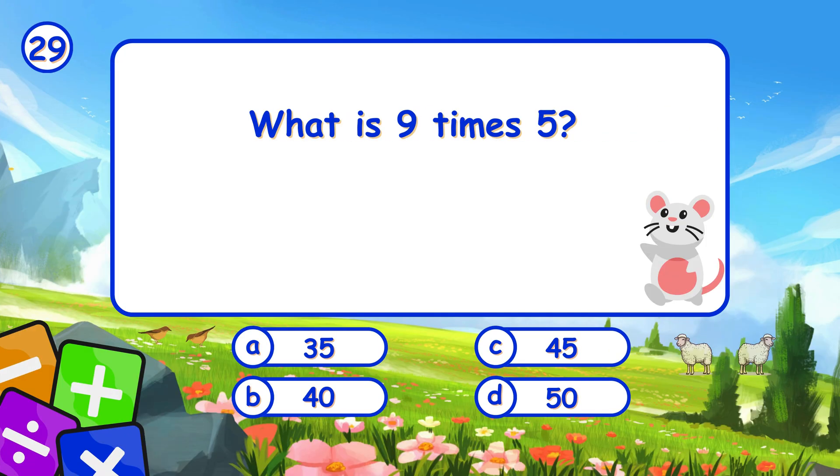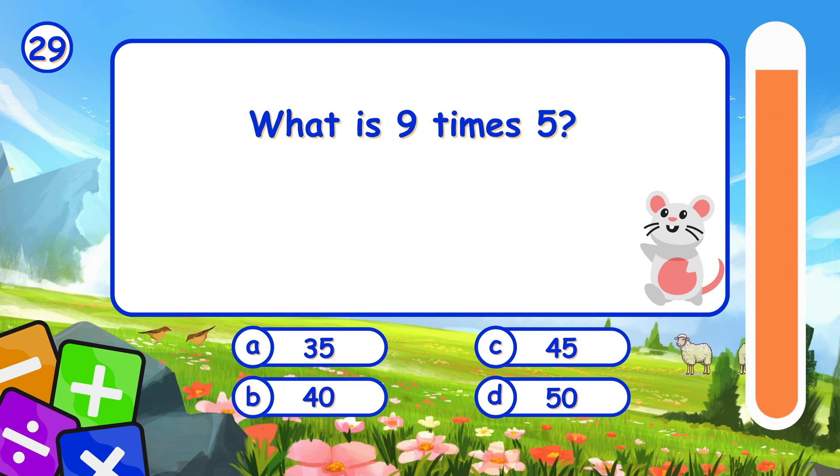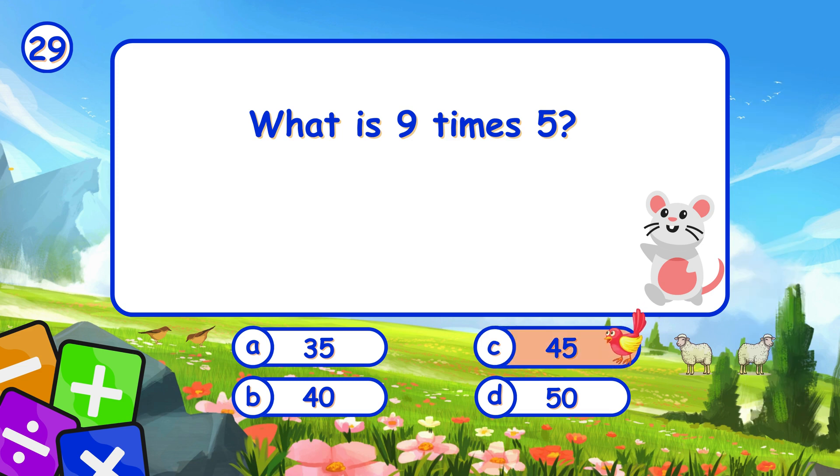What is 9 times 5? It's C, 9 times 5 is 45.